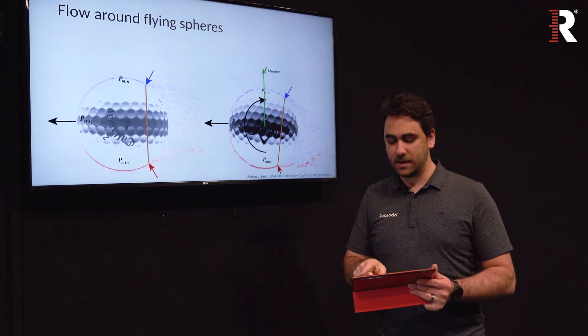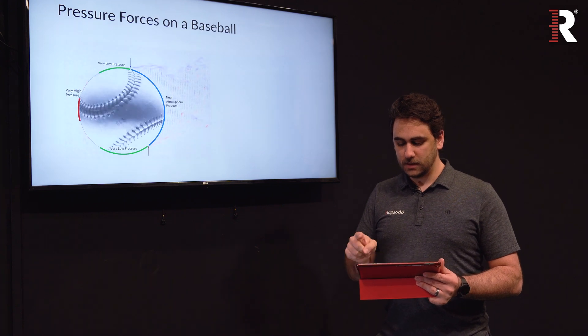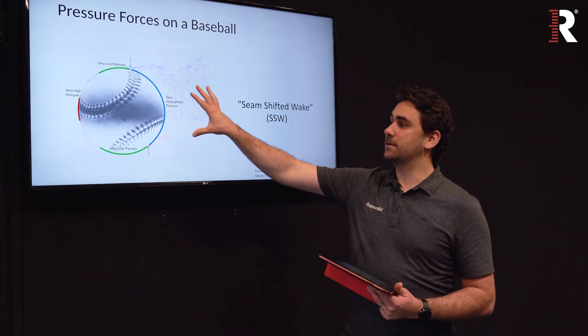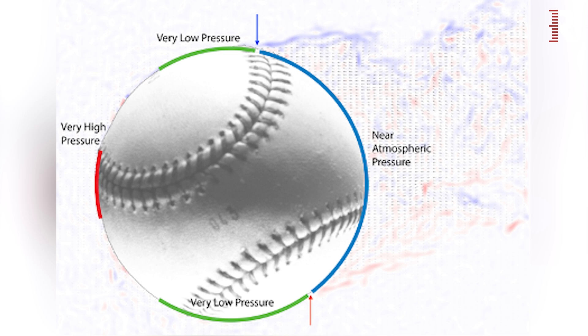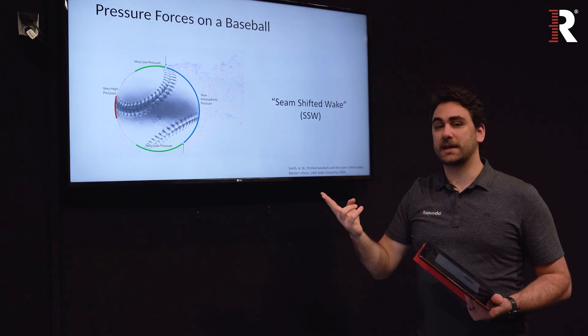Magnus is one way to create that asymmetrical wake, but it's not the only one. Shown here is a baseball traveling to the left at 90 miles an hour. We have the high pressure region and the low pressure regions marked on the top and bottom. You can see the wake is forming on the top of the ball earlier than on the bottom, even though this ball is not spinning — it's just moving to the left at 90 miles an hour. This asymmetrical wake creates a force pushing the ball down.